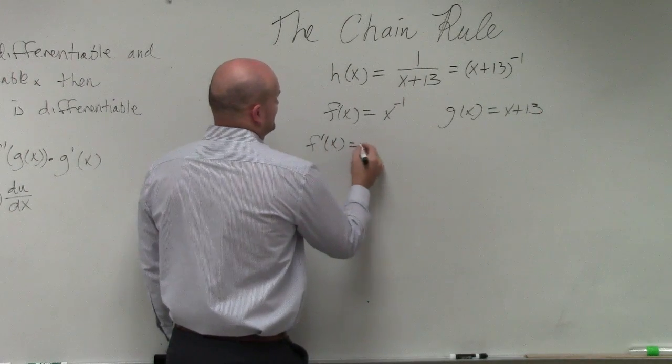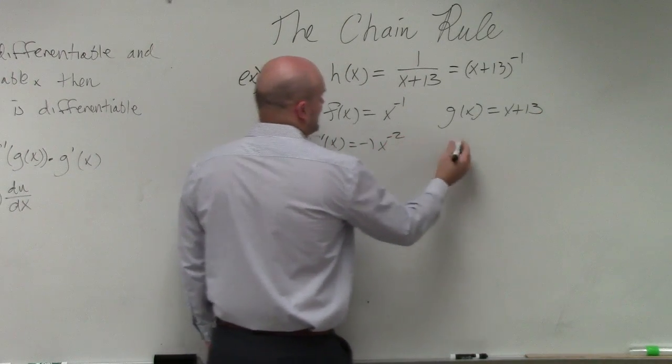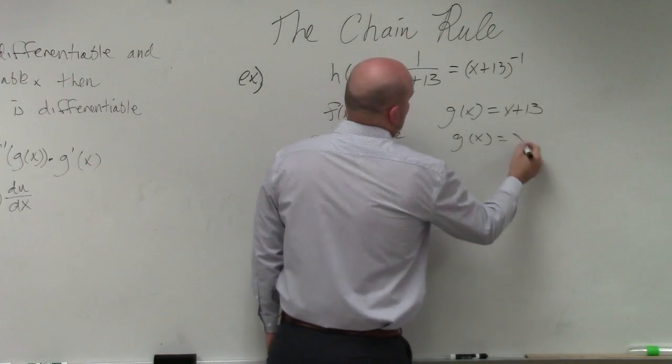f prime of x equals negative 1, x to the negative 2nd, g prime of x equals 1.